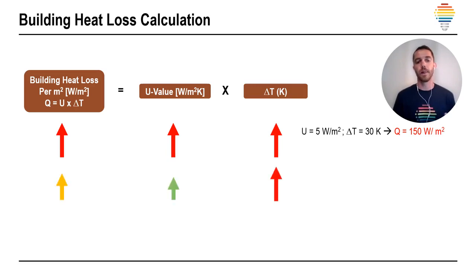Another example, if our U value is lower, delta T is high, then our heat loss is lower. For example, if our U value is 50% less, for example, 2.5 watts per square meter and our delta T is the same, like 30 Kelvin, then our heat loss is only 75 watts per square meter. So, 50% lower U value, 50% lower our heat loss.